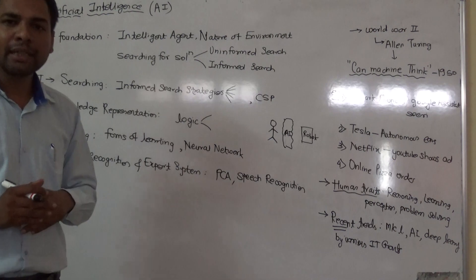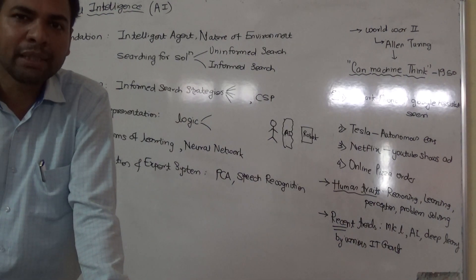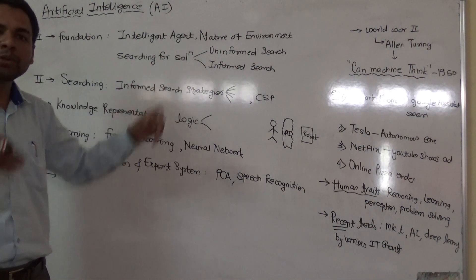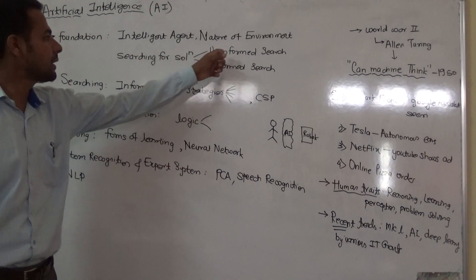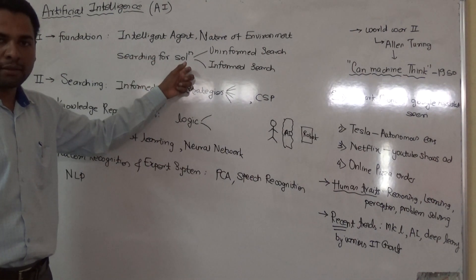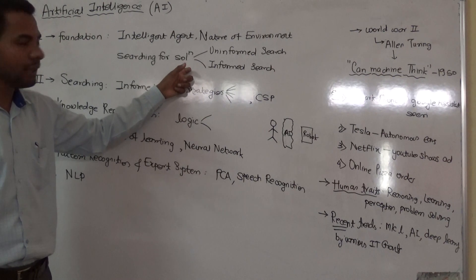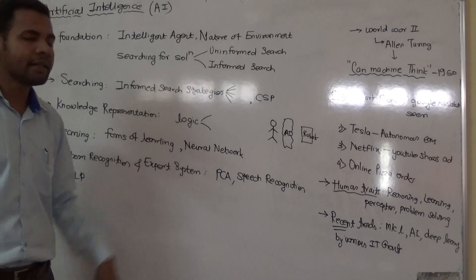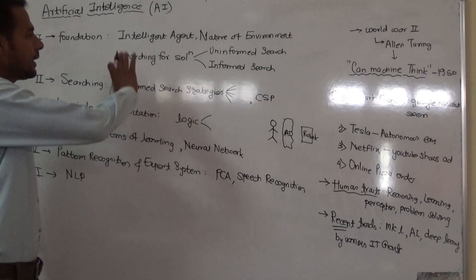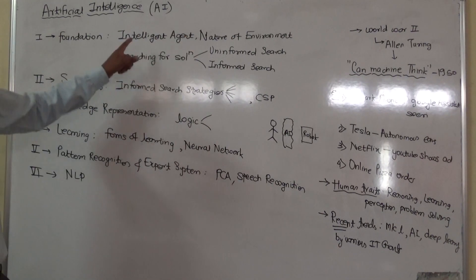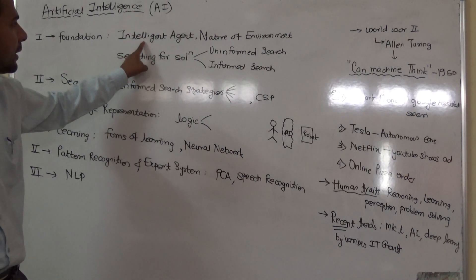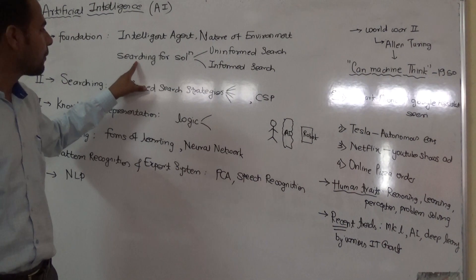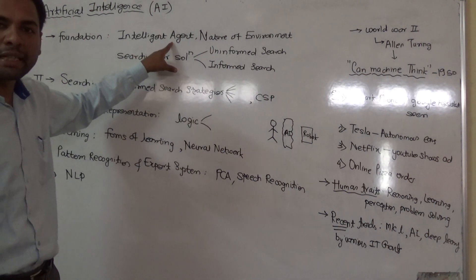Searching for a solution is also a key point in unit one. If the intelligent agent you design wants to solve a certain problem, then which techniques and searching strategies can be used to find the solution? There are two key searching strategies in the syllabus: uninformed search and informed search. In unit one we are going to study the fundamentals of intelligent agents, the types of environment in which agents work, and which searching strategies agents use to obtain the final solution.